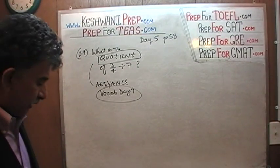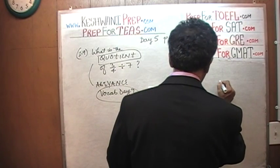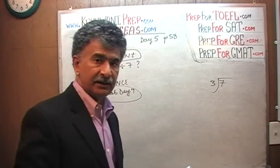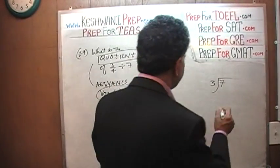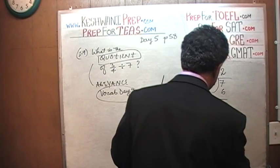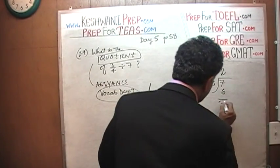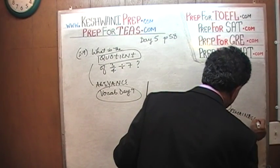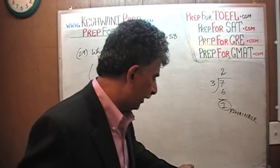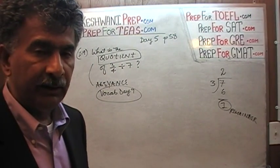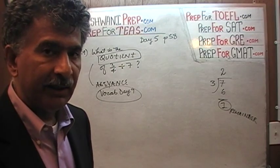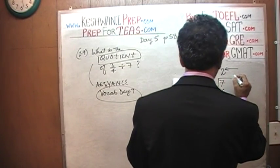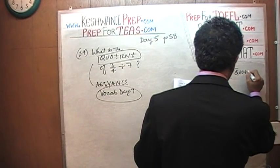Let's talk about what quotient actually means. Take this example: 7 divided by 3. Seven divided by 3 goes 2 times — that's 6 — with a remainder of 1. Quotient is just a fancy way of saying the number that we get as a result of division. The number we get here is 2. This is called the quotient.